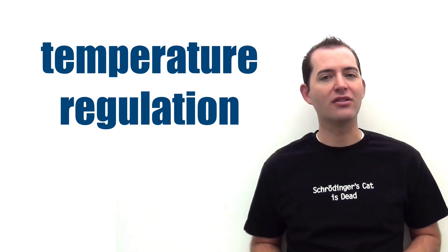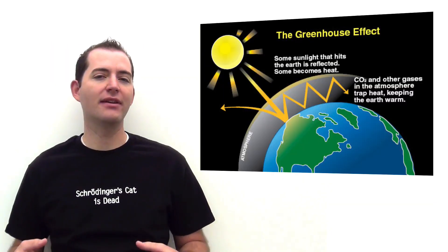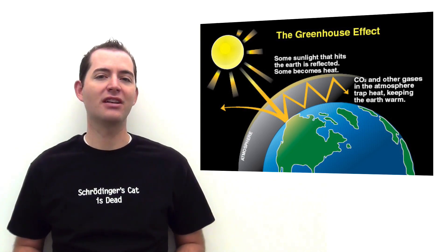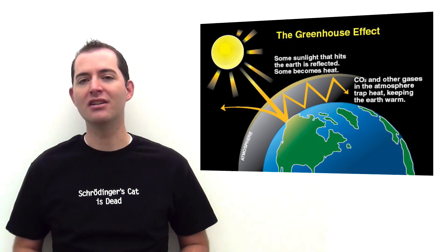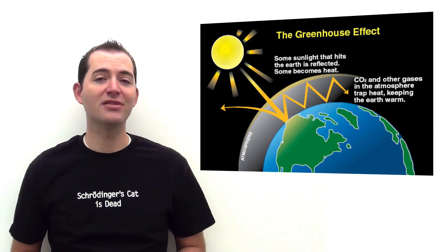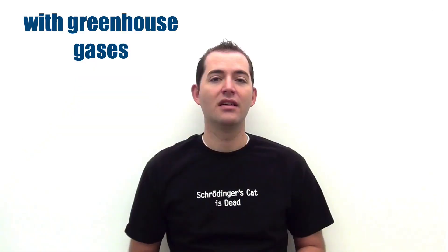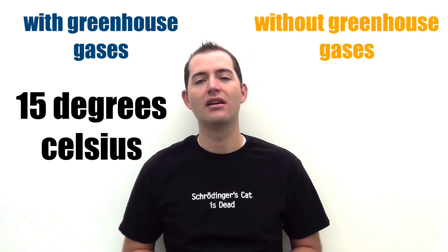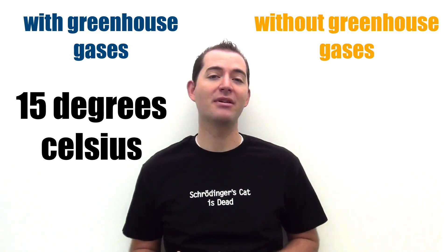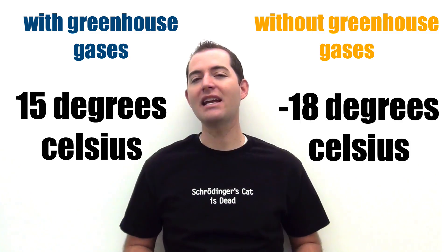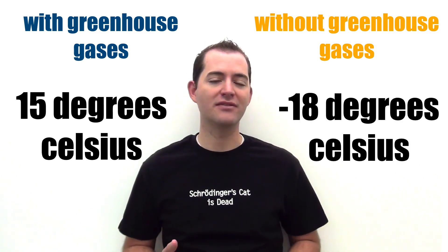Temperature regulation is done through what is called the Greenhouse Effect. Gases in our atmosphere trap heat from the Sun, which helps the Earth to have a milder temperature than it would otherwise have — including carbon dioxide and methane. The current average temperature is about 15 degrees Celsius or 59 degrees Fahrenheit. Without gases in Earth's atmosphere trapping some of the heat from the Sun, our average temperature would likely be about negative 18 degrees Celsius or 0 degrees Fahrenheit.